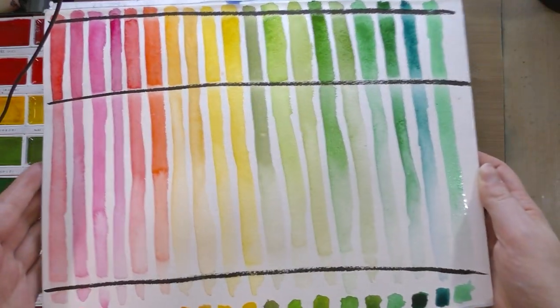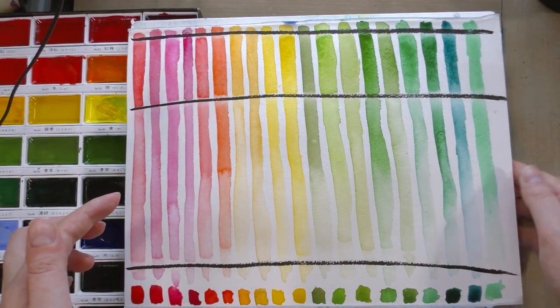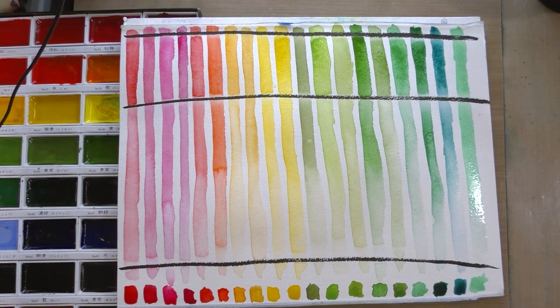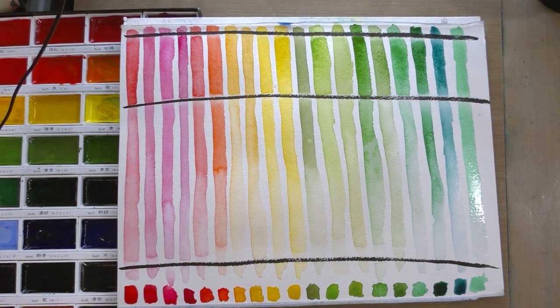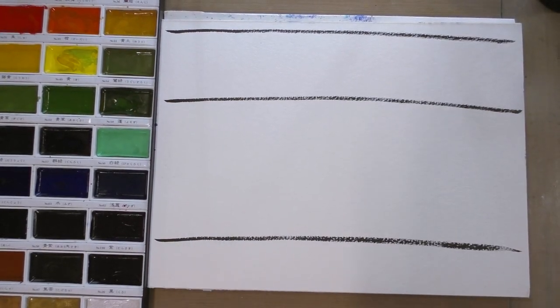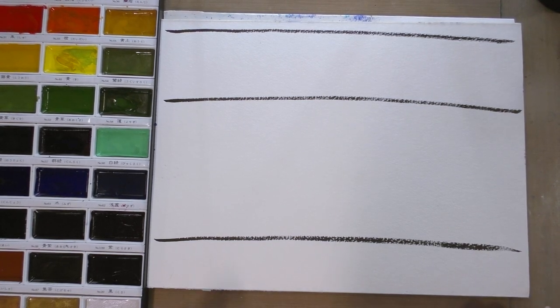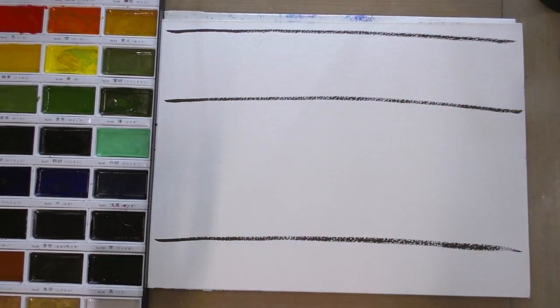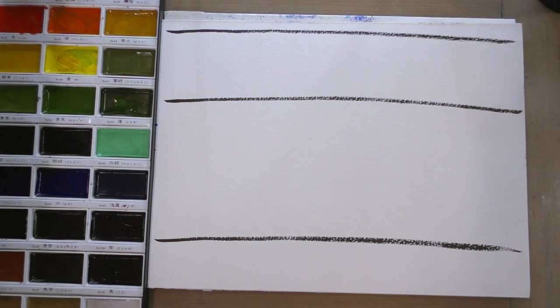All right, this is the first half of my Kuretake Gansai Tambi set swatched. I just switched over to yet another Fluid Easy Block watercolor pad that I marked with, again, pigment-based ink.